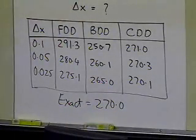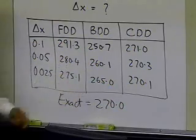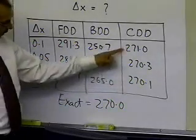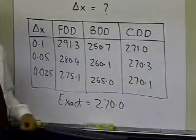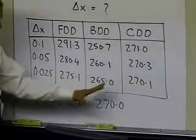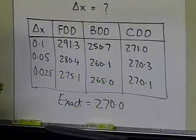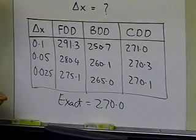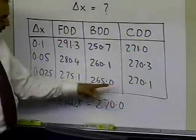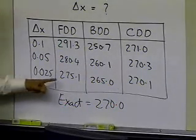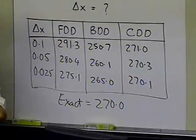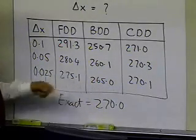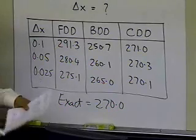We can clearly see that the forward and backward divided difference formula numbers are quite a bit away from the exact value. However, the numbers from the central divided difference formula are very close to the exact value. This gives us a hypothesis that the central divided difference scheme is more accurate than the forward and backward schemes, because you're getting more accurate answers for the same value of delta x. So the question arises: why is the central divided difference scheme more accurate?